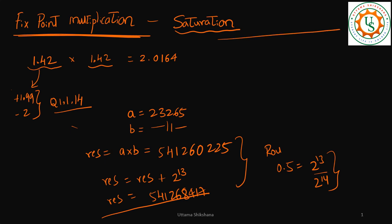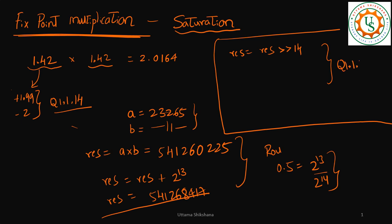Next, the result is right-shifted by 14 bits because we are in Q14 format. When these were multiplied, the fractional part has 28 bits, so we drop the last 14 bits to get the answer in Q1.1.14. After right-shifting by 14, the result is 33036.